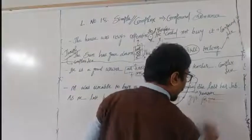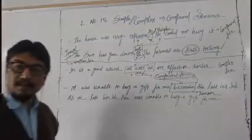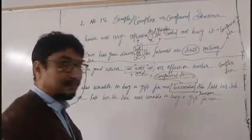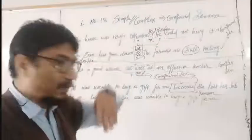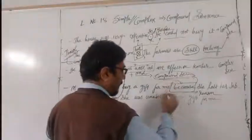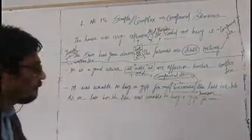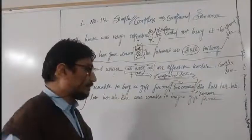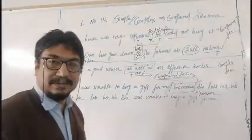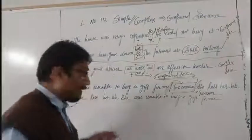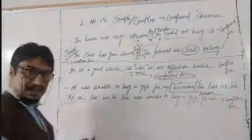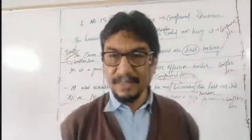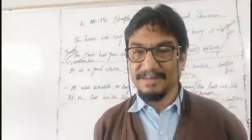For me, for me. Now I want to convert the same sentence into a simple sentence. Actually these are two different sentences. Mira was unable to buy a gift for me — I established the reason to make it compound, and what I wrote became the complex. For that I used the conjunction in the initial stage. Now I want to make it a simple sentence.